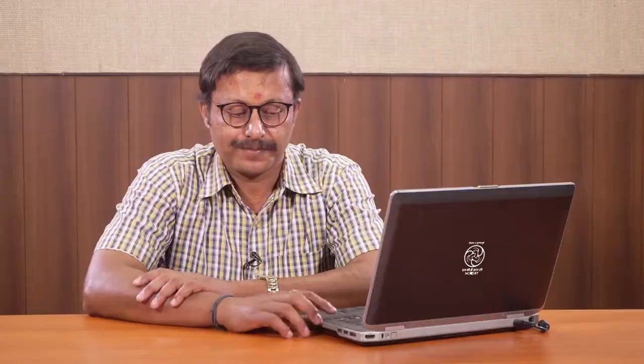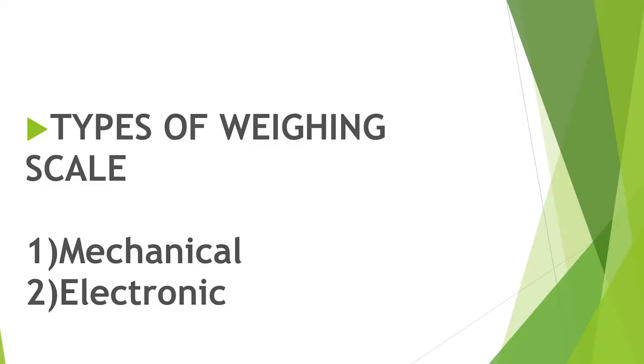1 kg is equal to 1000 grams. If I am buying some apples and I want 1 kg of apples, that means 1 kg equals 1000 grams. Now for measuring, different types of scales are present — some are mechanical and some are electronic. Mechanical scales don't use any battery or electronic equipment, while electronic scales depend on battery and electricity for use.